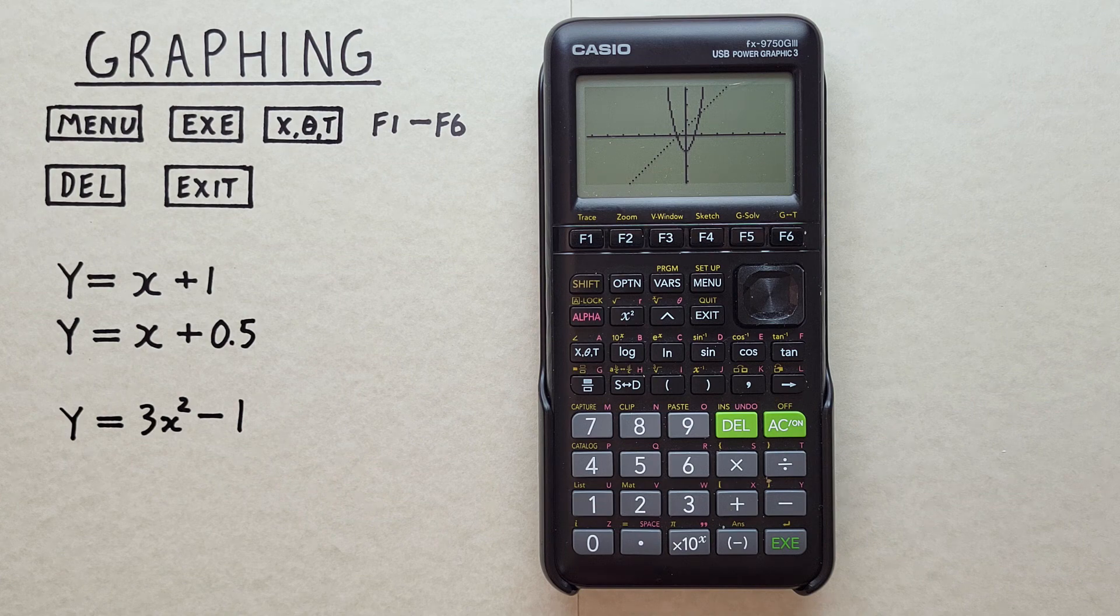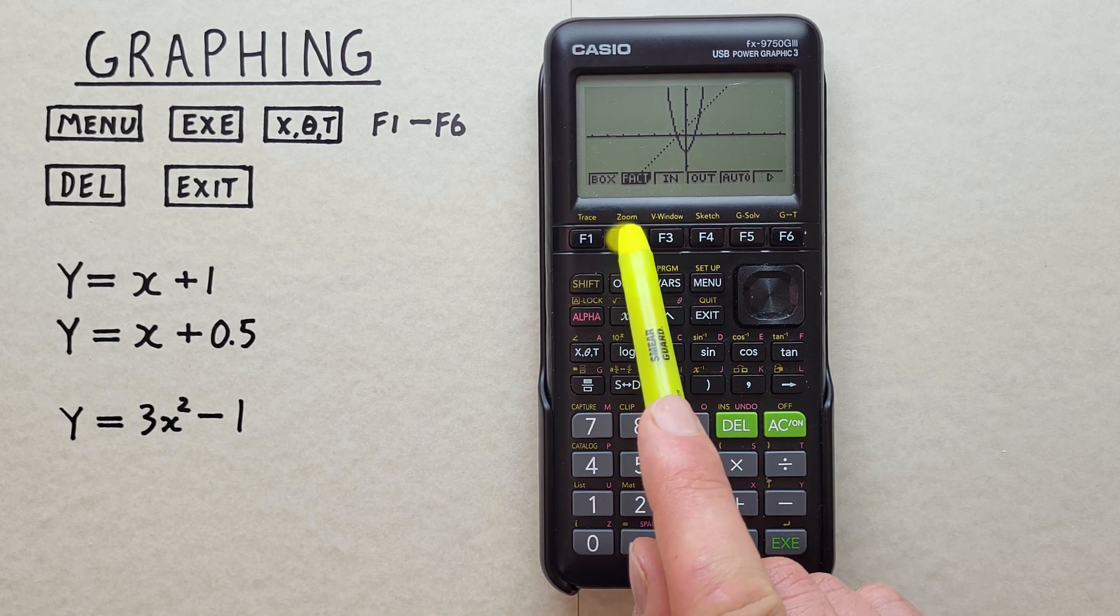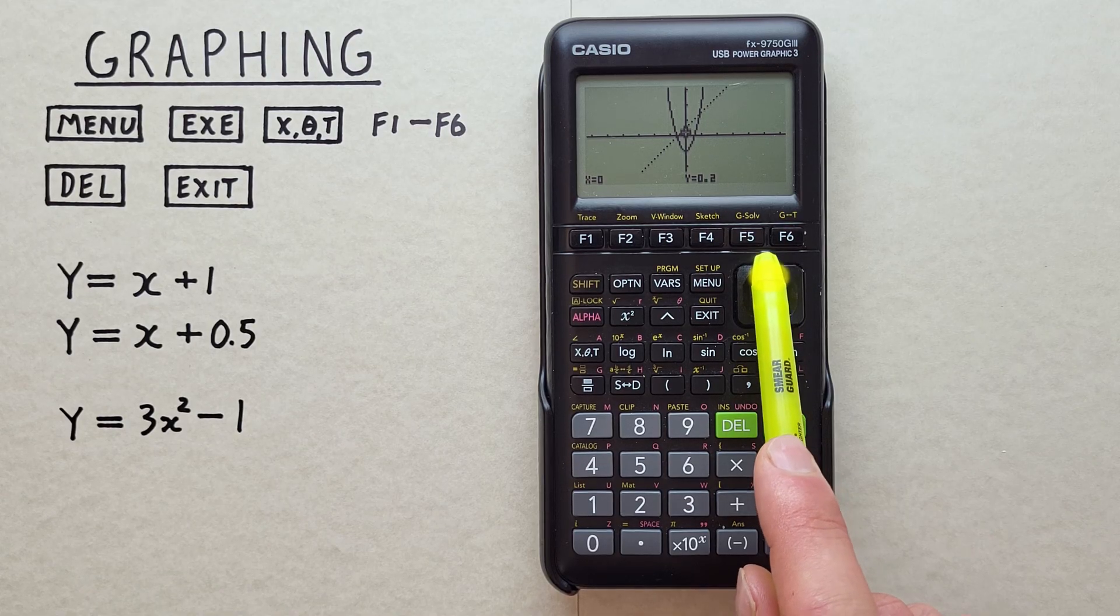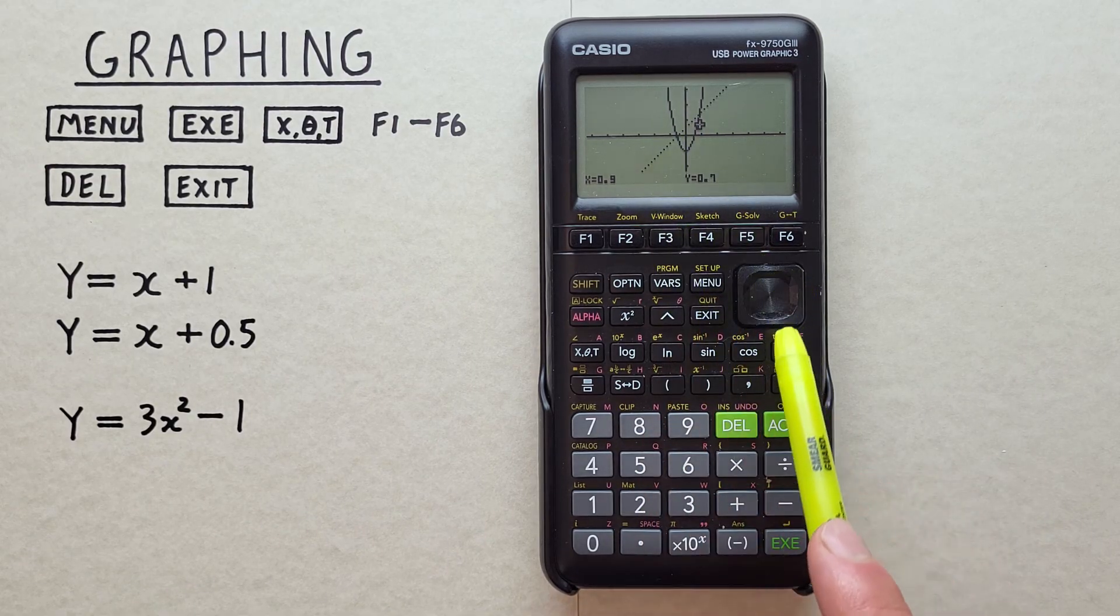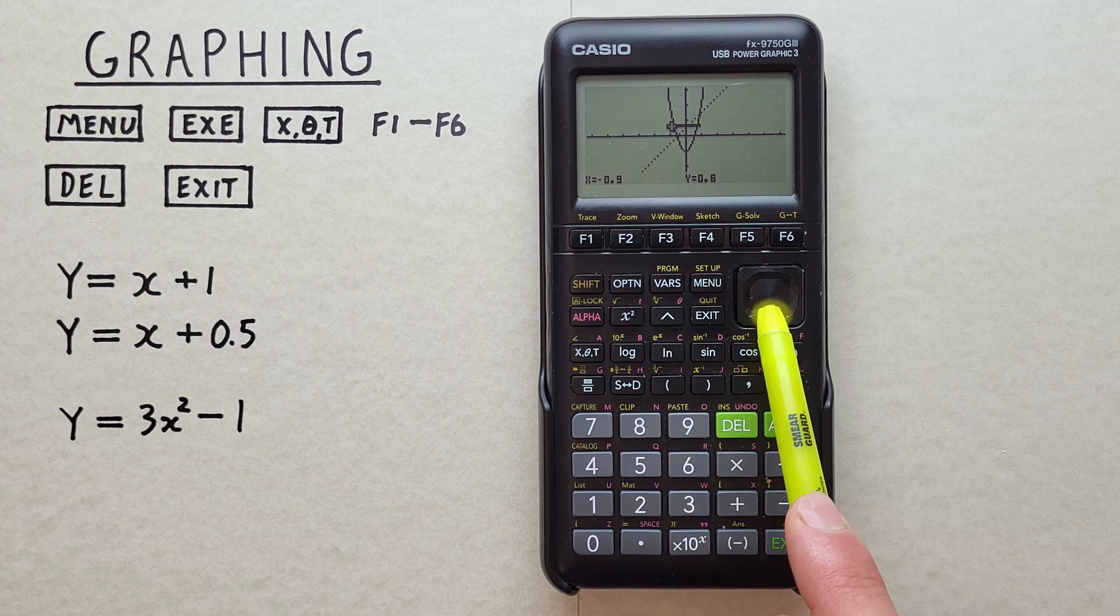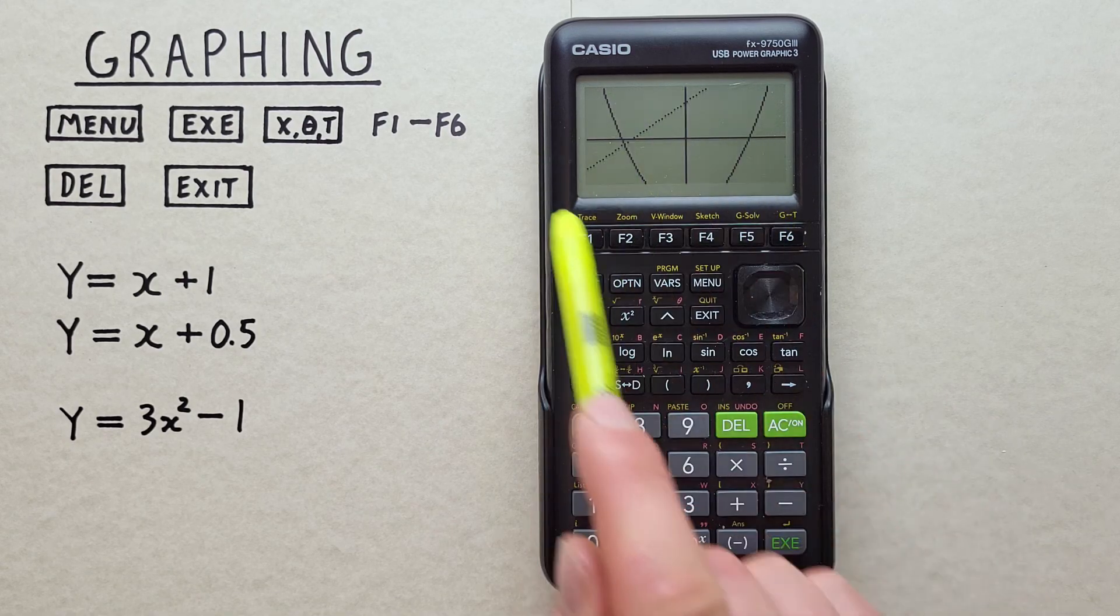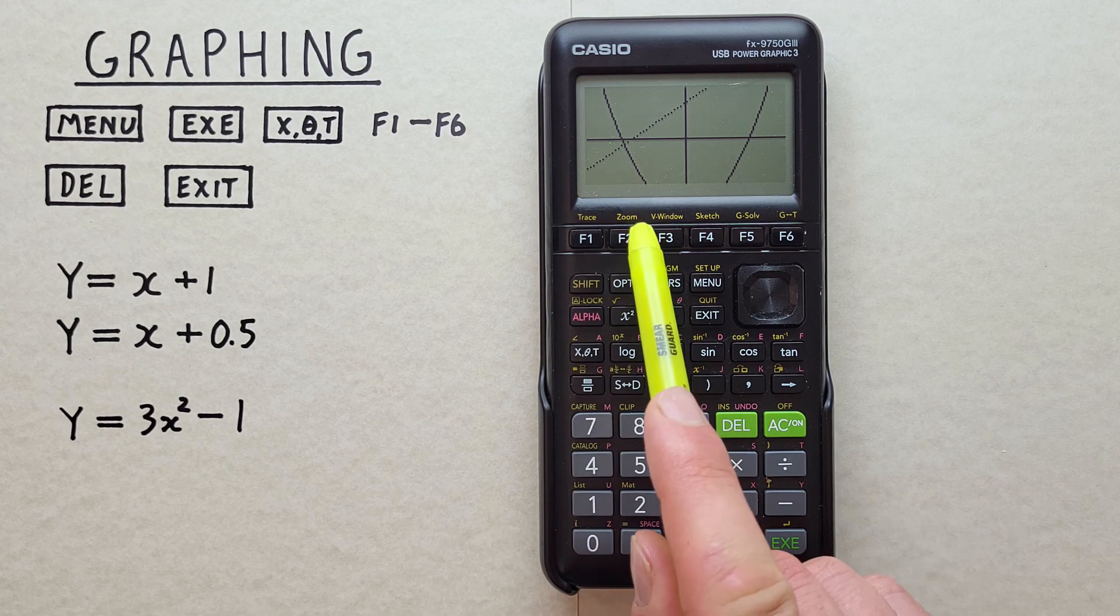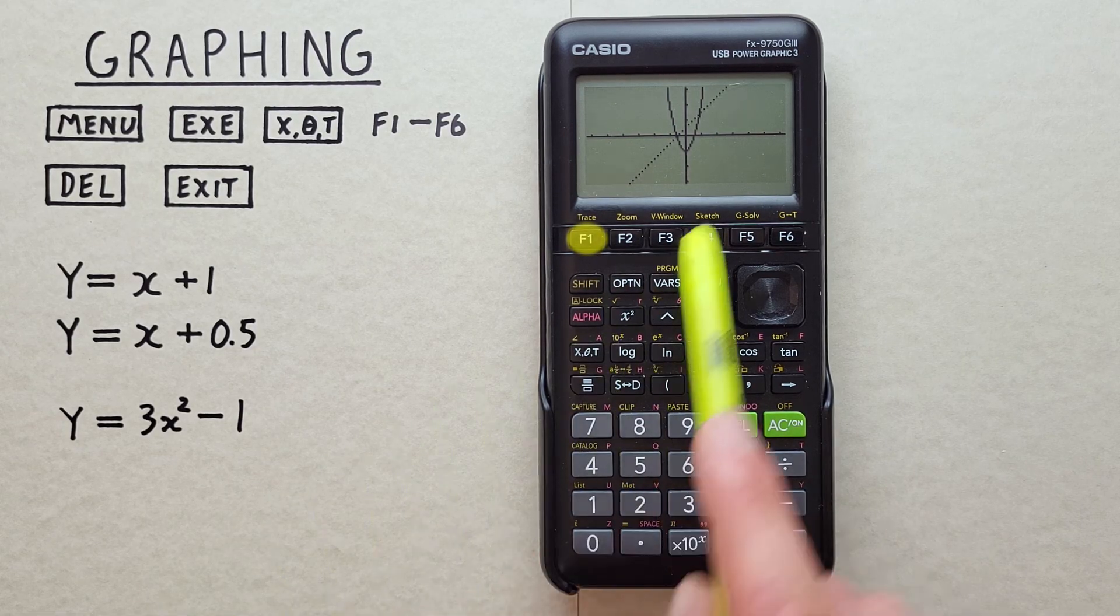We can also use a box zoom to highlight a specific area on our graph and zoom in on it. To do that, we can hit the F2 key for zoom, and then select box F1 there. Now we see the cursor, and we can draw a box that we want to zoom in on. Let's say we wanted to zoom in right here. We highlight the top right corner, hit EXE, scroll down to the bottom left, hit EXE again, and we see we've zoomed in on that specific area. Again, we can go back by hitting the shift F2 or just the F2, scrolling over to the F1 original, press that, and we're back to our original view.